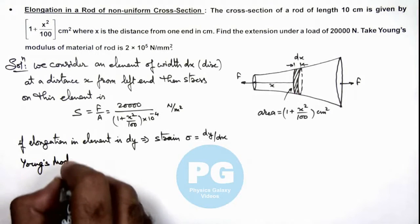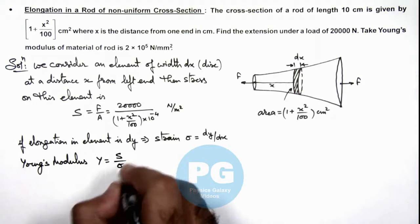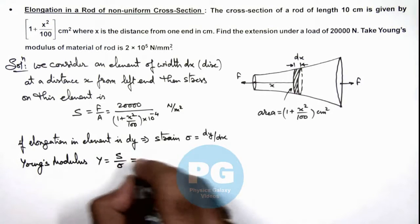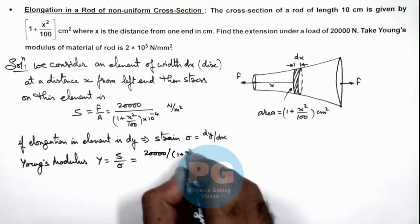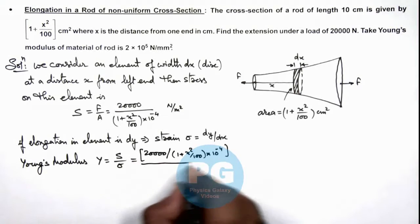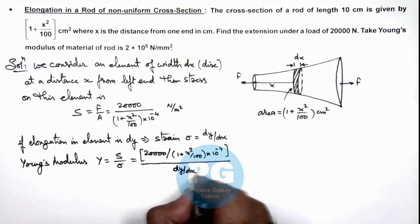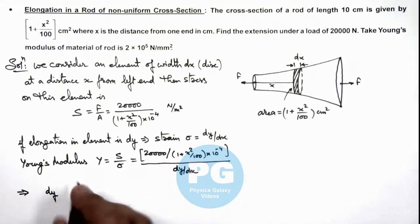And now we can write the Young's modulus for the material is stress by strain, this is S by sigma. So in this situation we can write stress as 20,000 divided by 1 plus x squared by 100 multiplied by 10 to power minus 4, divided by here strain is dy by dx.